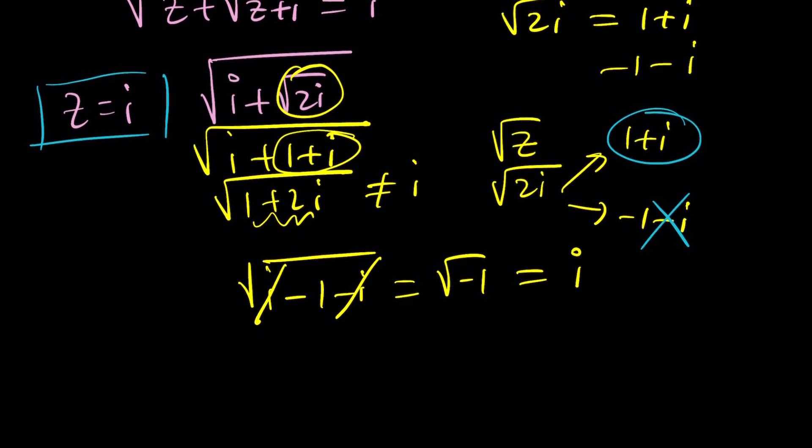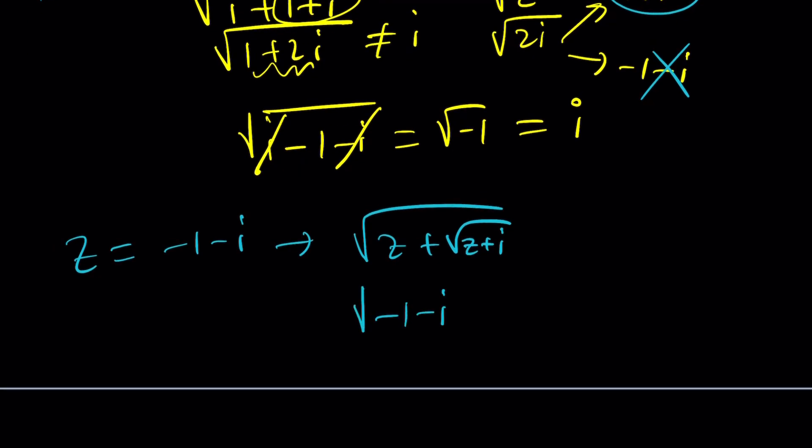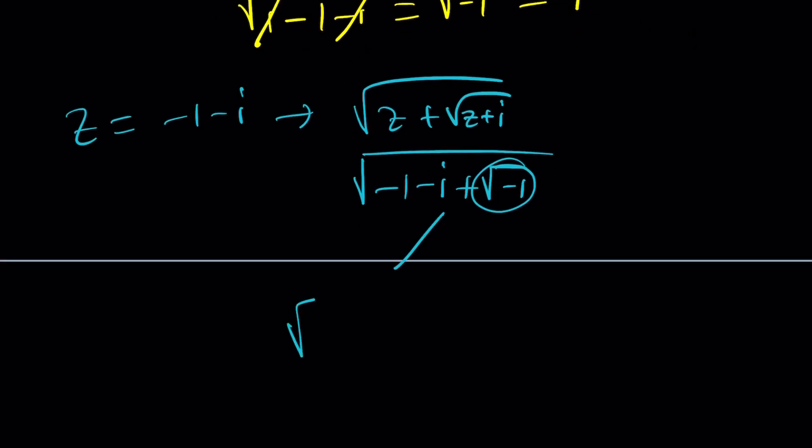Let's go ahead and test something else. z was i, and what was the other scenario? Negative 1 minus i. If z is negative 1 minus i, then we're going to go ahead and replace z with that. And that should give us square root of negative 1 minus i plus the square root of negative 1, right, because i is going to cancel out, and this will be i or negative i. If this is i, we're going to get negative 1 minus 2i. If this is negative i, actually, if this is negative i, we're going to get that. If this is i, then we're going to get negative 1, the square root of negative 1, which again can be i or negative i.